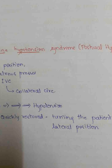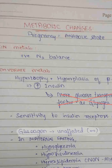In central hemodynamics, there are no significant changes in CVP, MAP, or PCWP, despite increases in blood volume, cardiac output, and heart rate. This is because of significant falls in SVR, plasma pulmonary vascular resistance, and colloid osmotic pressure. An important clinical aspect is supine hypotension syndrome, where the gravid uterus presses on the inferior vena cava in the supine position. If collateral circulation is also blocked, hypotension occurs, quickly restored by turning the patient to the lateral position.